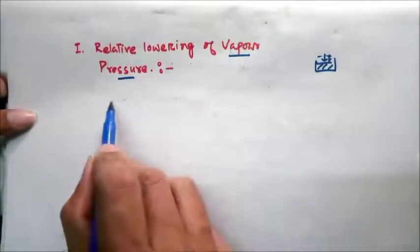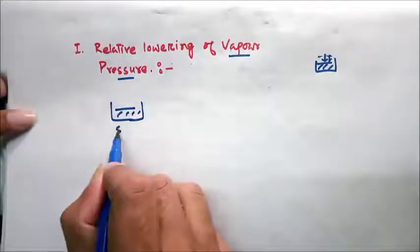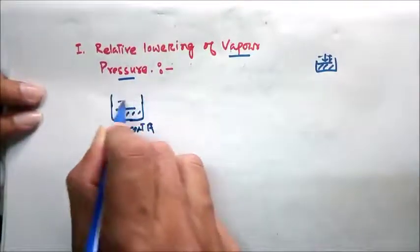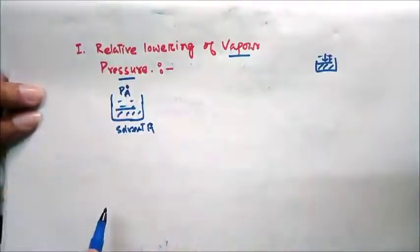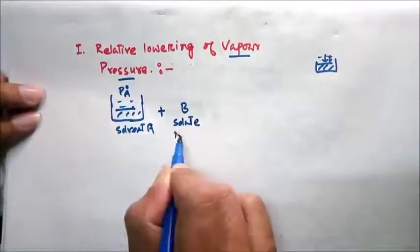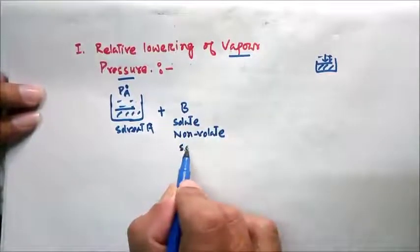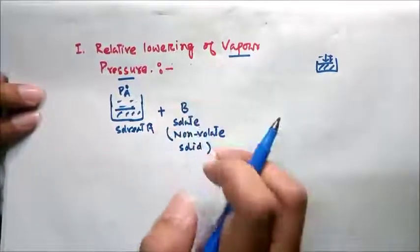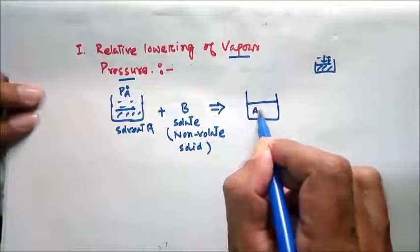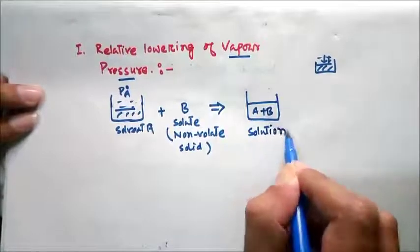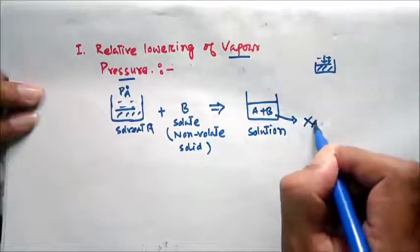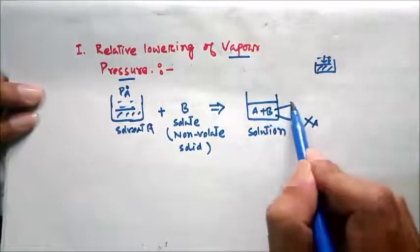Let us consider a solution. Here you are considering a pure solvent A, which has a vapor pressure Pa0. In this solvent you are adding a solute B. This solute is a non-volatile solid, meaning it cannot undergo vaporization — it cannot go into the vapor state. When we mix these two we get a mixture of A and B, which is the solution. In this solution, the mole fraction of A is denoted by XA and the mole fraction of B is denoted by XB.